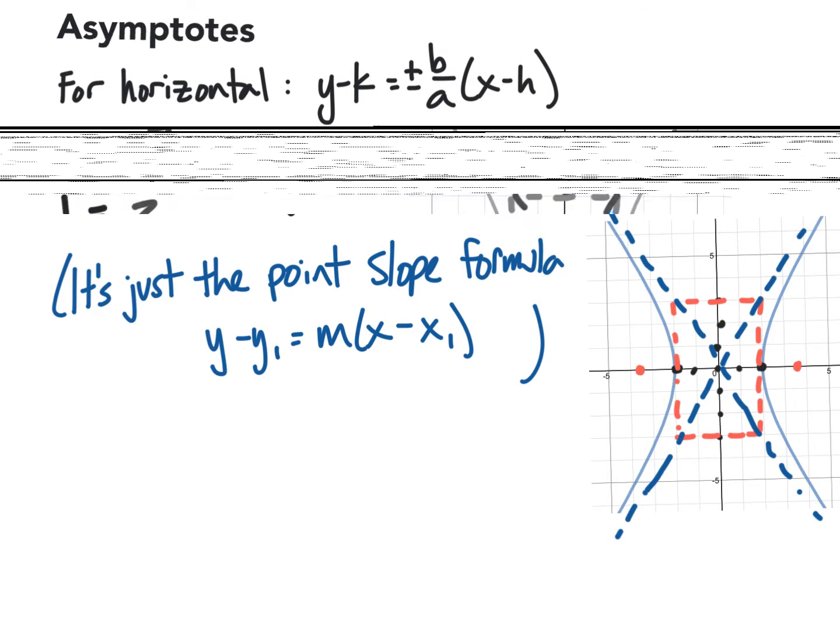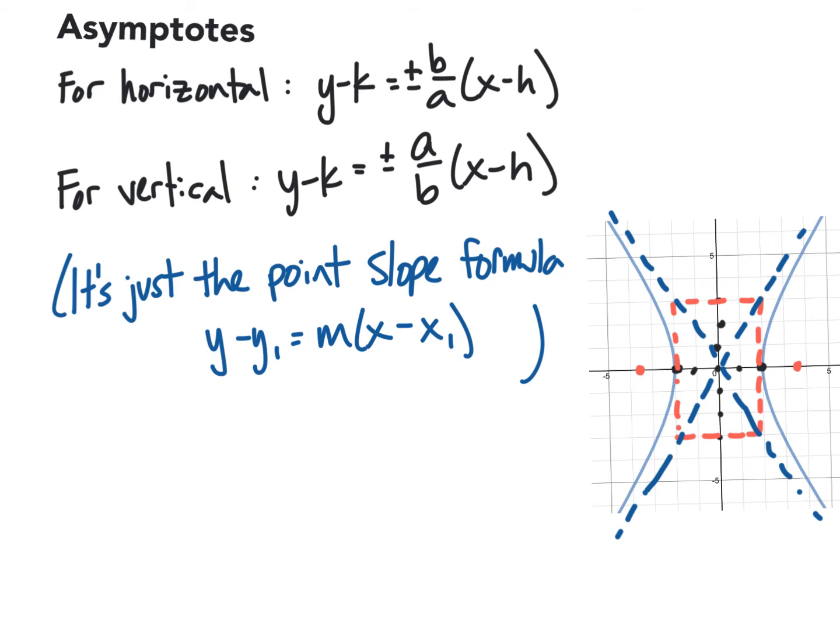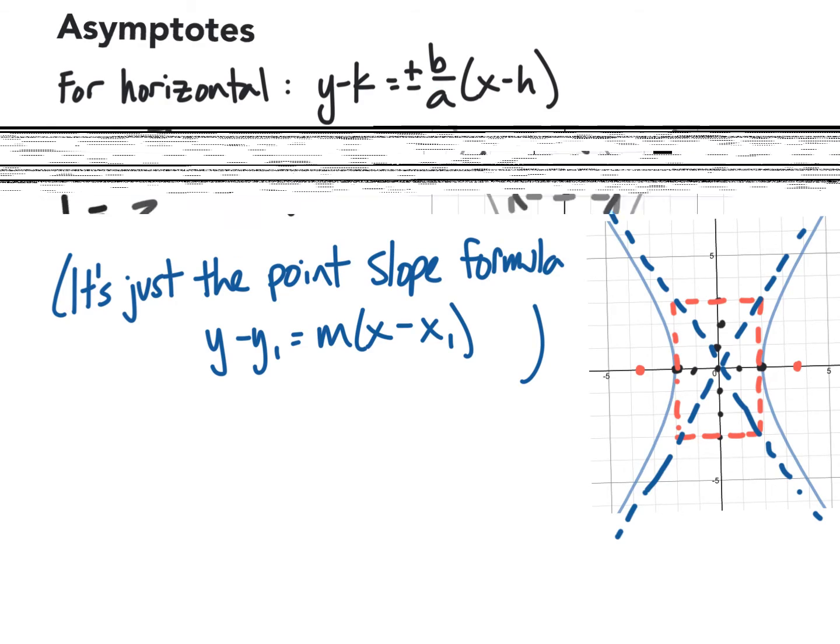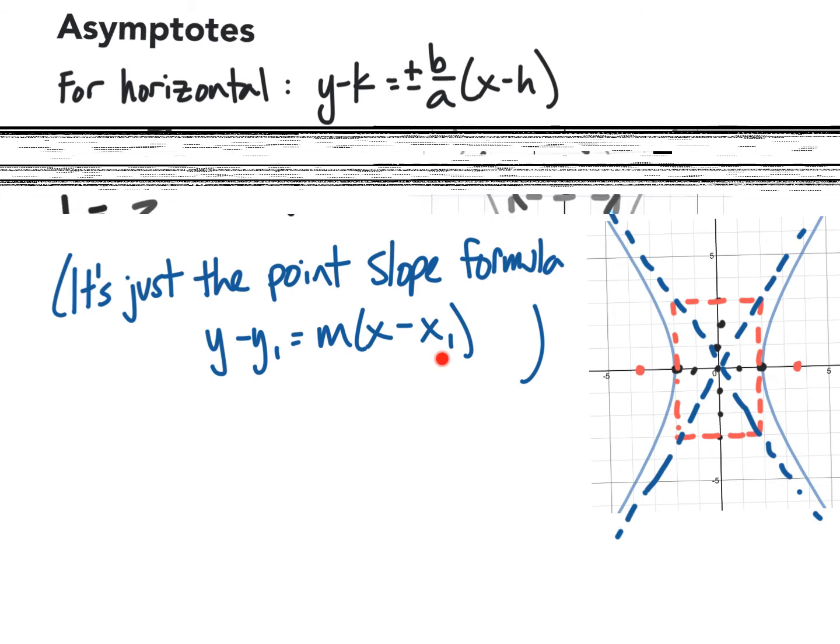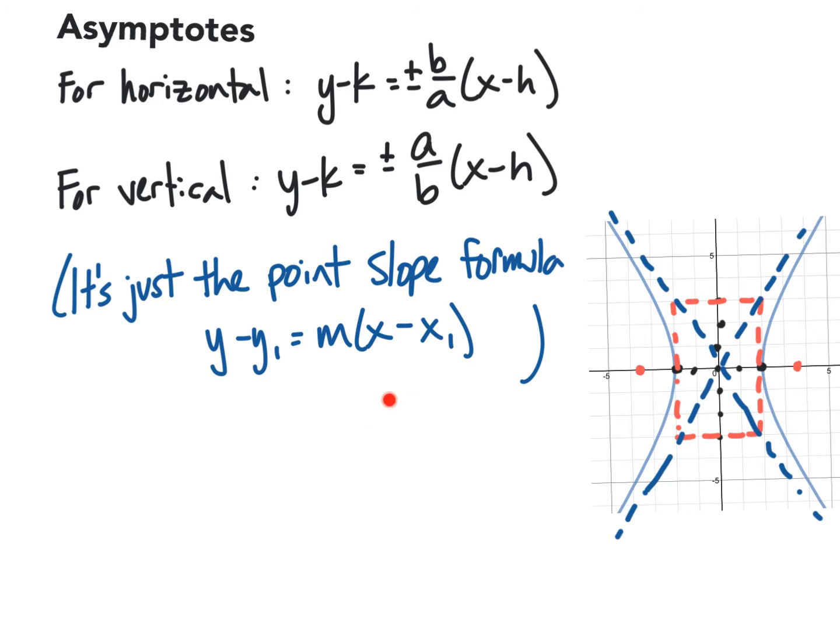Now, the equations of the asymptotes can be found just by using y - k = ±(b/a)(x - h) or a/b if it's a vertical, but these look a lot more confusing than they actually are. These are just the point-slope formula: y - y₁ = m(x - x₁). Use the center for x₁ and y₁. And the slope, you can just see from using your box. This went up 3 and over 2, which for a horizontal was the b/a.